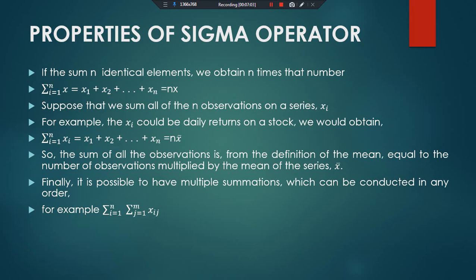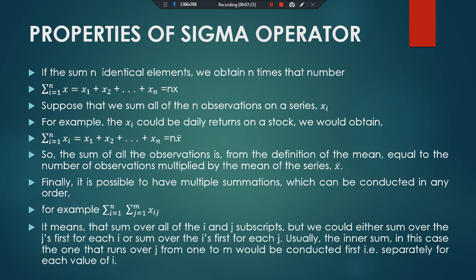Multiple summations can be conducted in any order. For example, sigma from i=1 to n, and sigma from j=1 to m, of x_i times x_j can be written equivalently as sigma of x_j times x_i — there is no need for a specific order. It means summing over all i and j subscripts. We could either perform the inner sum over j's first for each i, or sum over i's first for each j. Usually the inner sum — the one running over j from one to m — is conducted first.